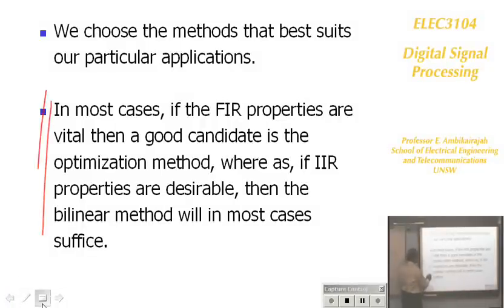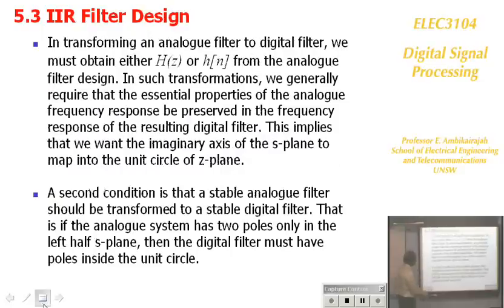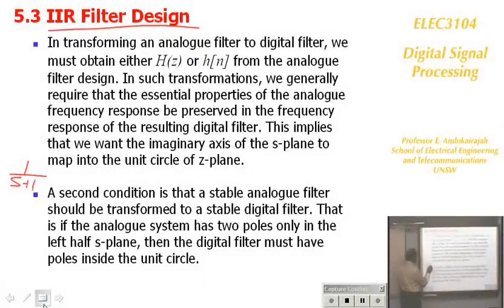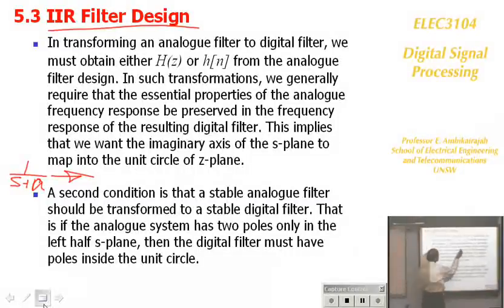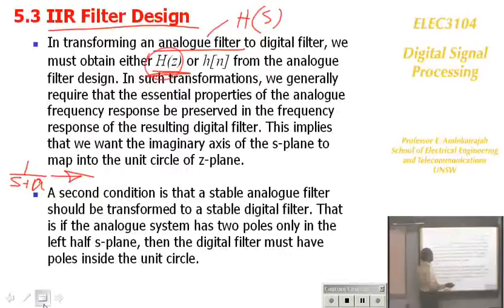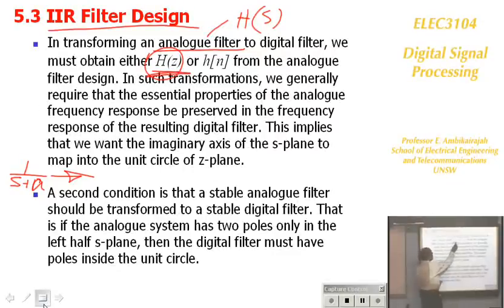We are now going to look at IIR filter design. To do IIR filter design, you start with an analog filter and translate it to a digital filter. You start with an analog filter transfer function H(S) and try to get H(Z). First, you use the knowledge from Chapter 4 on analog filter design. Once you know that, you apply the transformation technique and get the digital filter immediately.